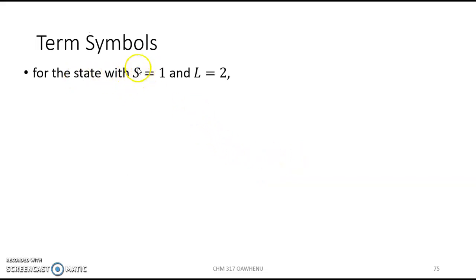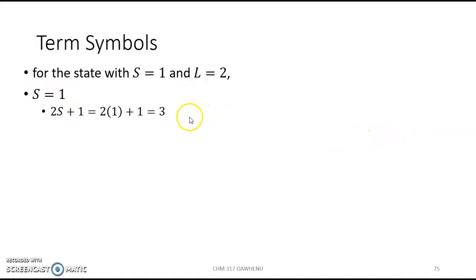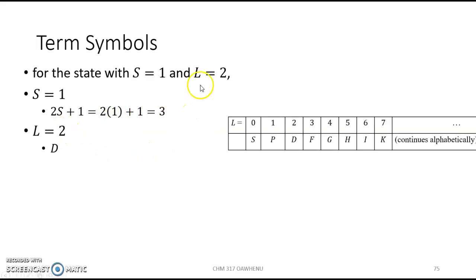If we have a state where the resultant spin S is one and the resultant L is two, what will the J value be? For S equal to one, the multiplicity is 2S+1, which gives 2×(1)+1 = 3. For L equal to two, if we look at our table, when L is zero it is represented by capital S, and when L is two the corresponding letter is capital D. So we have a D state.